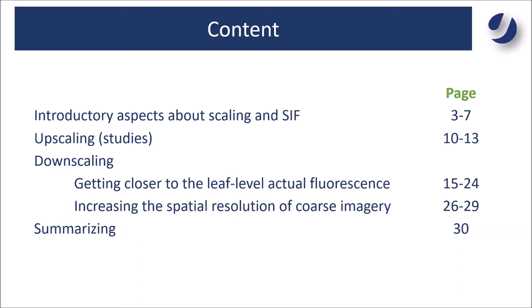For the downscaling part, I will present it in two different perspectives. The first one from the perspective of downscaling as getting closer to the actual leaf level values of plant traits — in my research area, the actual values of fluorescence. Then I will give the downscaling issue from the perspective of increasing the resolution of coarse imagery. At the end we will summarize some concepts.